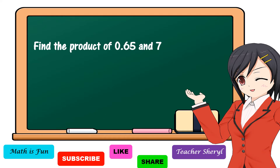Another example. Find the product of sixty-five hundredths and seven. We're going to write in vertical form, then multiply the factors as we multiply whole numbers, ignoring the decimal point first. Seven times five, the answer is equal to 35. We put five here and regroup three. Seven times six is equal to 42, plus three is equal to 45. Then we're going to count the decimal numbers found after the decimal point. We have two decimal places, so we're going to count two decimal places in our product and put the decimal point here. Our answer is four and fifty-five hundredths.